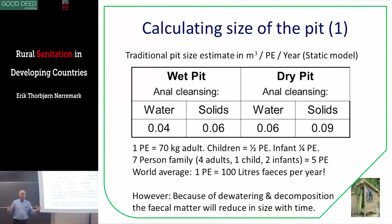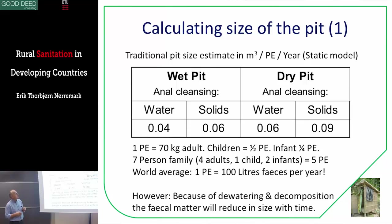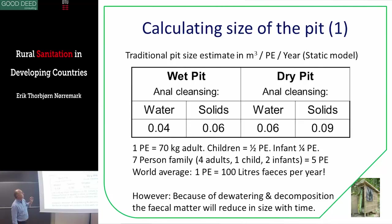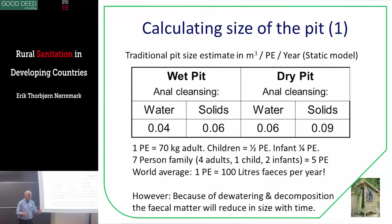When we want to calculate how big a container or pit should be, in most books, including your textbook, you will have a table looking more or less like this. It's the traditional model — I call it the static model. It's based on observations of lifetime compared to volume, compared to number of uses. They say if you have a wet pit where you add a lot of water, you need 0.04 cubic meters per person per year. If you have five people and want it to last 10 years, you get a specific volume.